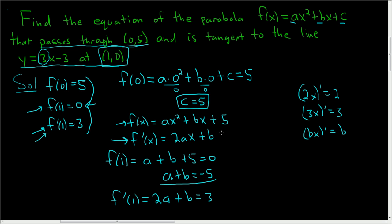We have two equations with two unknowns: a + b = -5 and 2a + b = 3. We need to solve for a and b. Let's subtract. a - 2a = -a, b - b = 0, and -5 - 3 = -8, so -a = -8, which means a = 8.